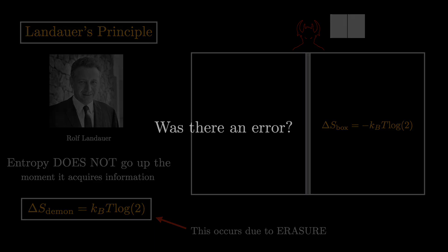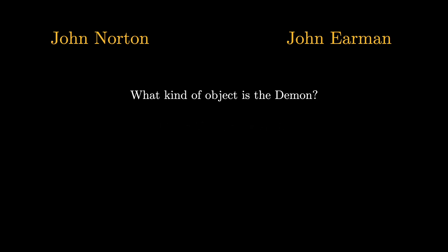Unless there was a flaw in either Szilard's or Landauer's reasoning. This is exactly what two notable philosophers of physics have argued. In a paper published in 1998, John Earman and John Norton attempt to show that Maxwell's demon still remains a problem for the second law. Their argument is incredibly simple. If you consider what kind of object the demon actually is, there are only two possibilities.